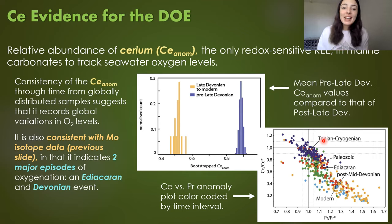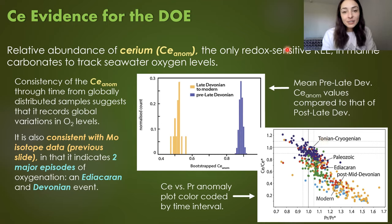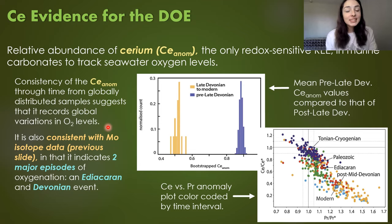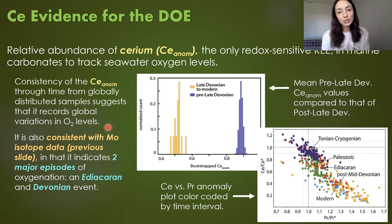Another line of evidence for the Devonian Oxidation Event comes from cerium, the only redox-sensitive rare earth element, measured in marine carbonates to track seawater oxygen levels. The consistency of the cerium anomaly through time and across a global distribution of samples suggests it records accurate global variations in oxygen. This cerium data is also consistent with molybdenum and other redox-sensitive element data, and like those data, it indicates two major episodes of oceanic oxygenation: the Ediacaran and the Devonian Oxygenation Events.